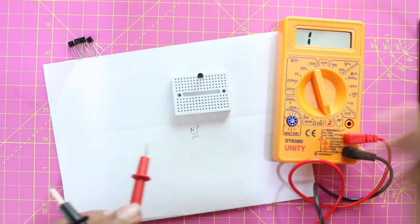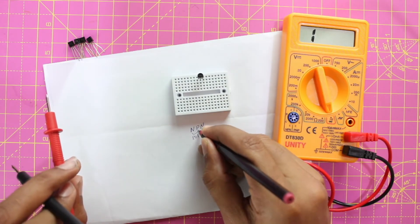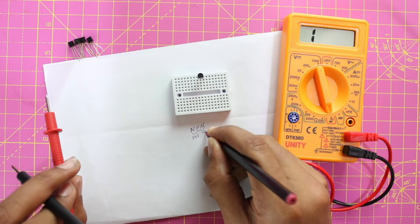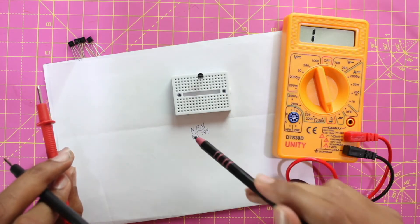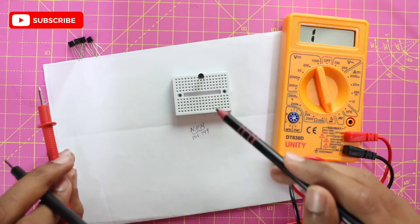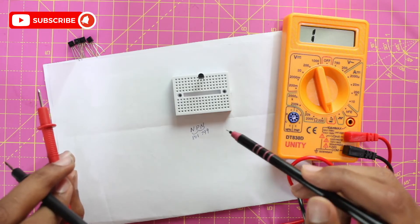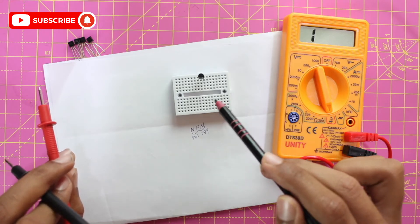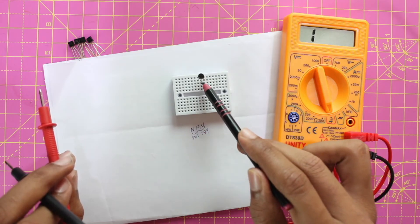Okay, now we already know that this is an NPN transistor, and we know the voltage drop between the first two pins and the second two pins. We have to figure out which one is the emitter, base, and the collector. Now it is always easy to identify the base, which is the P type. So since this is the P type pin, this will be the base.